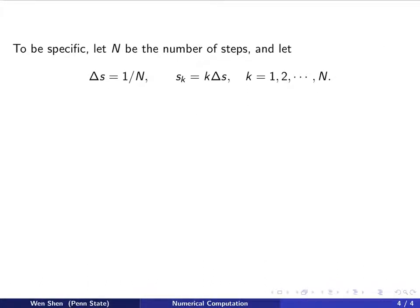To be specific, we choose N to be number of steps, and let delta s to be 1 over N, and define sk to be k times delta s for k from 1, 2, to N.